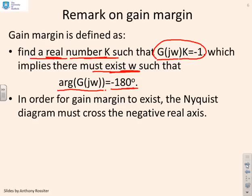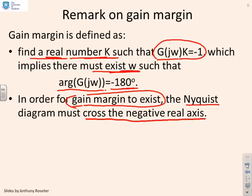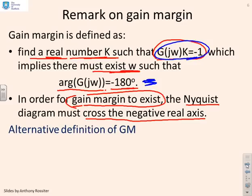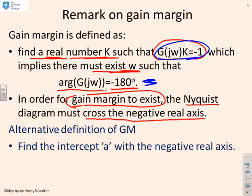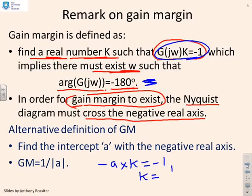For the gain margin to exist, the Nyquist diagram has to cross the negative real axis, since that's where the argument is minus 180 degrees. If it doesn't cross the negative real axis, there's no ω giving minus 180 degrees and we can't solve the problem. So the alternative definition: find the intercept a with the negative real axis, and the gain margin is 1 over the modulus of a, since minus |a| times K equals minus 1 gives K equals 1/|a|.